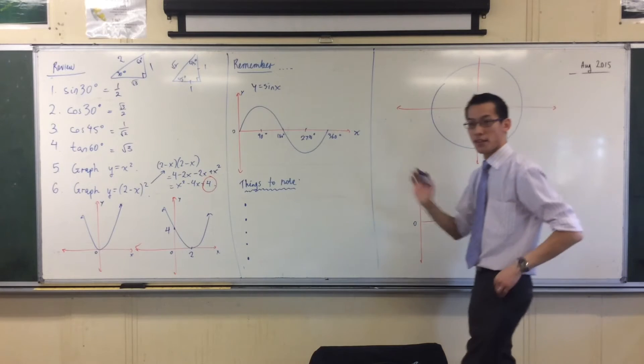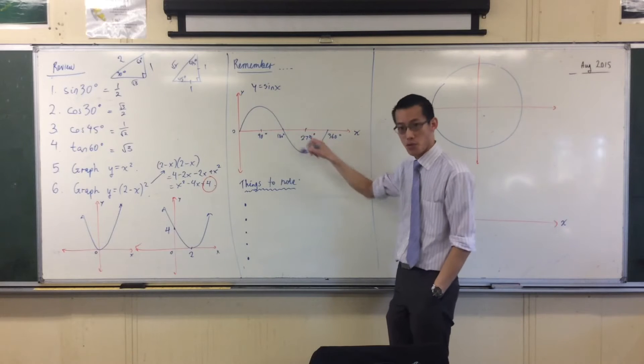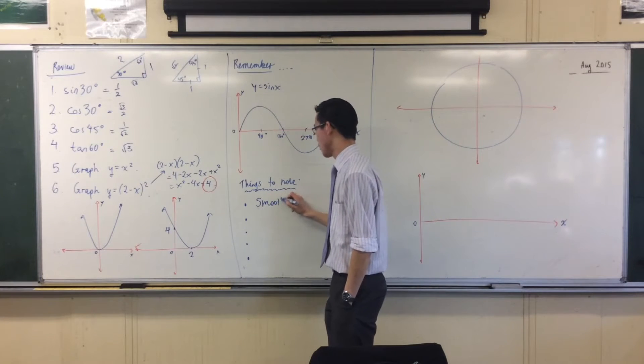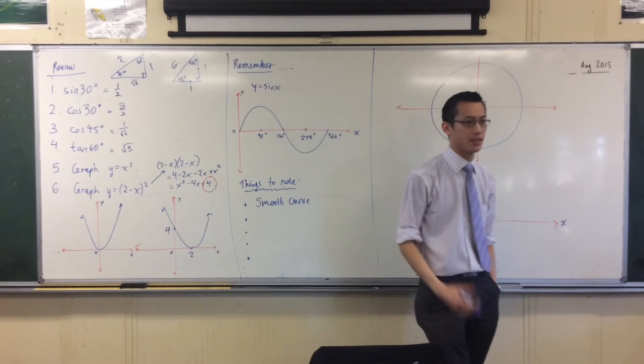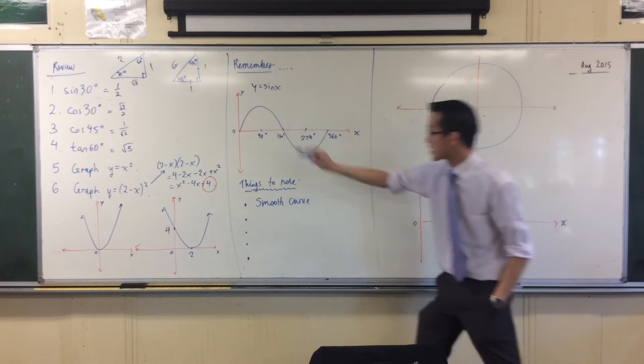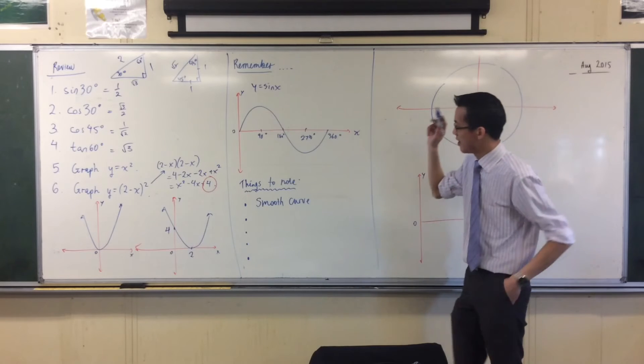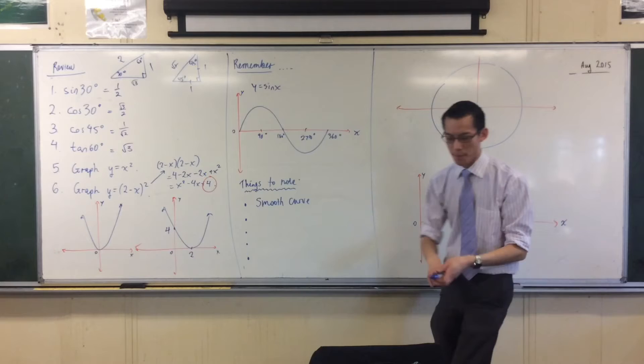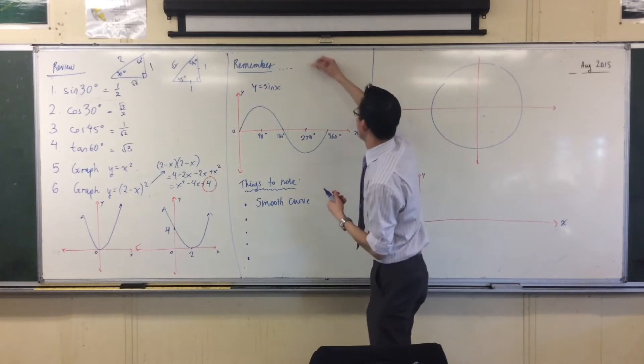A few things to know. The first thing is, it's a smooth curve. It's a smooth curve. In fact, if you recall, that's what sine means. It means curved. That's where it gets this shape from. That's where it gets its name from, rather. So, it's a smooth curve.